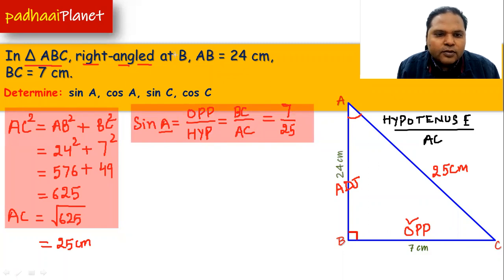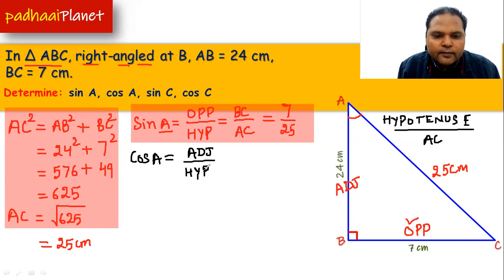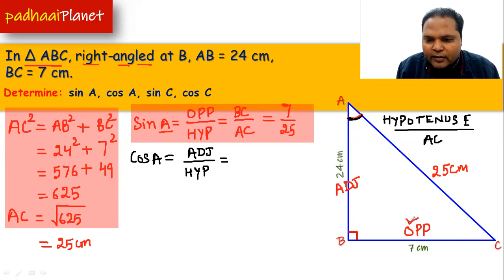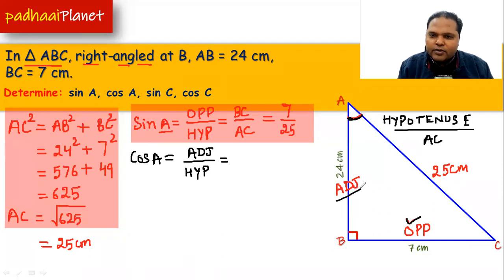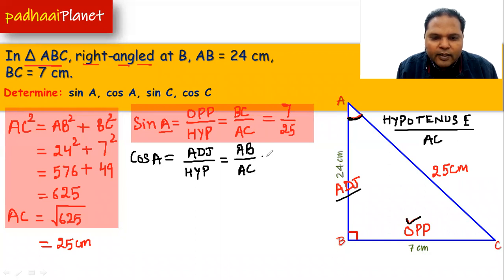Now let us move to the second one, which is cos A. Cos A is equal to adjacent over hypotenuse. Since we are referring to angle A, the side adjacent to angle A is AB. So adjacent over hypotenuse gives us AB divided by AC, and the value of AB is 24 and AC is 25. So cos A equals 24 over 25.